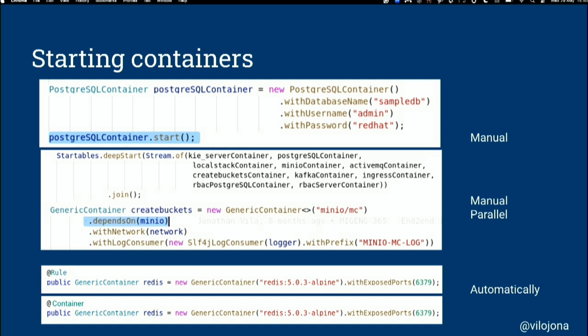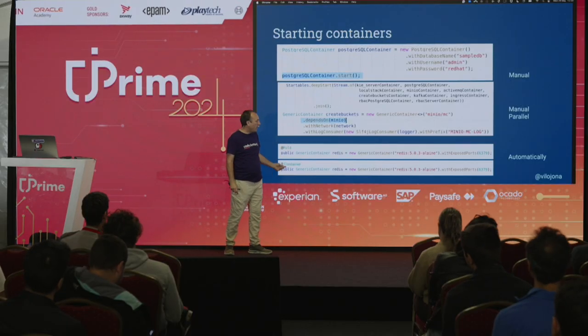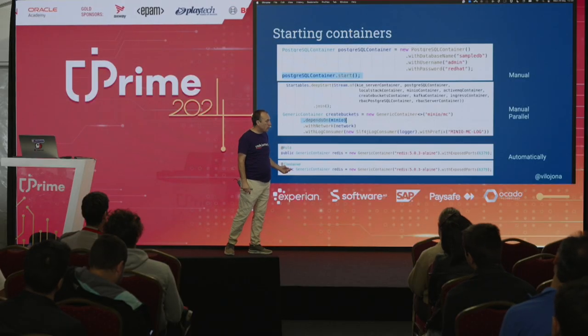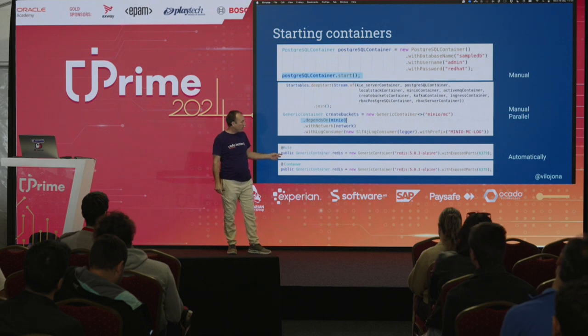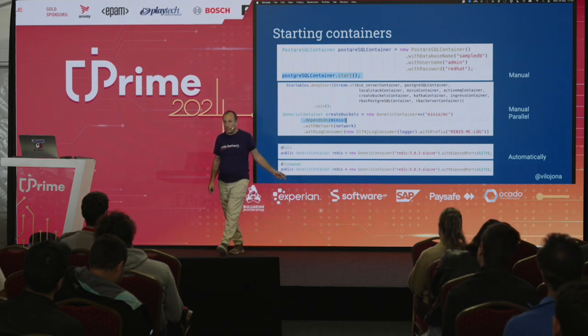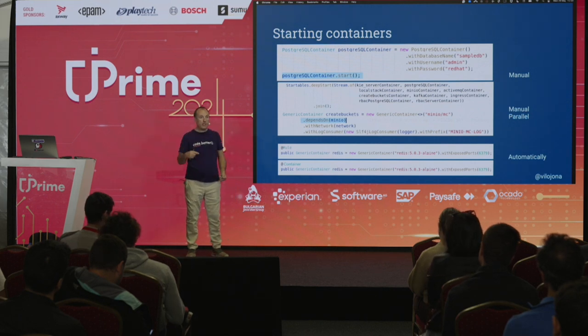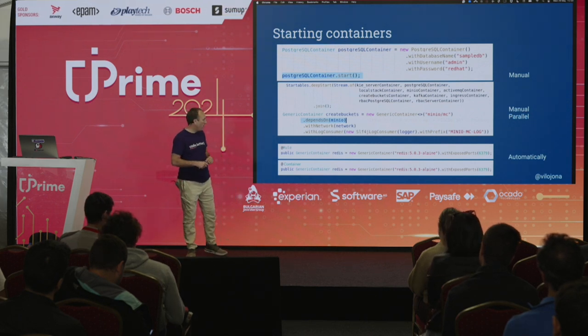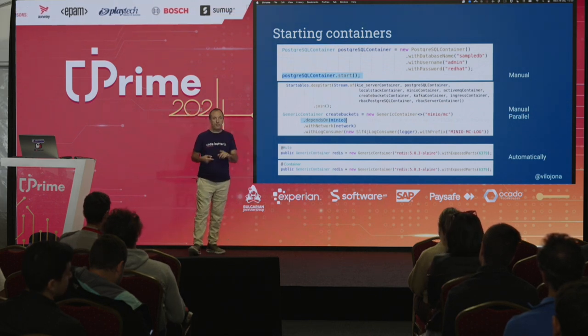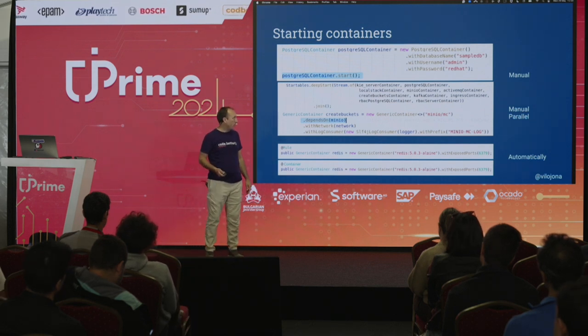You can also use JUnit 4 or Spring Boot container annotations to define which containers you're going to use in a test. They will be started and stopped according to the test lifecycle — this is the automatic way of starting these containers.